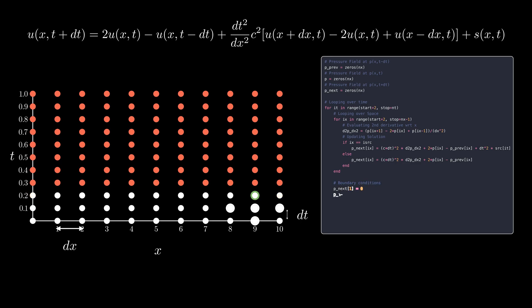Finally, the boundary conditions are explicitly defined and the loop continues on to the next time step. Upon completion, we have the complete solution of the wave equation.